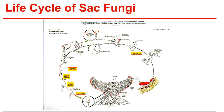Life cycle of the sac fungi includes both asexual and sexual reproduction. In asexual reproduction, tiny spores called conidia are formed at the tips of specialized hyphae called conidiophores. Sexual reproduction occurs when haploid hyphae of two different mating types grow close together. The hyphae produce a fruiting body; the gametangia from the two mating types fuse, but the haploid nuclei do not fuse. The ascus then forms within the fruiting body, producing eight cells known as ascospores.